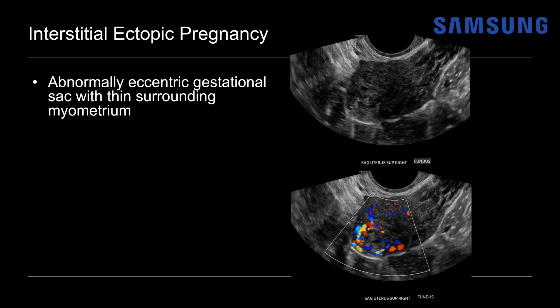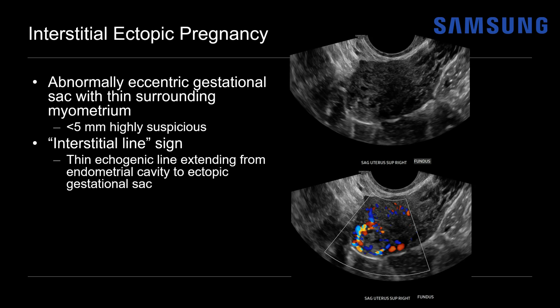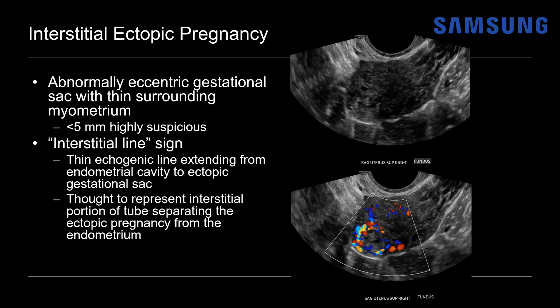On ultrasound, we'll see an abnormally eccentric gestational sac with only a thin surrounding rim of myometrium. If that myometrial thickness is less than five millimeters, that's highly suspicious for an interstitial ectopic pregnancy. Even less than eight millimeters has been shown to be concerning. The other key finding is the interstitial line sign — a thin echogenic line extending from the endometrial cavity to the ectopic gestational sac laterally — thought to represent the interstitial portion of the tube separating the ectopic pregnancy from the endometrium.